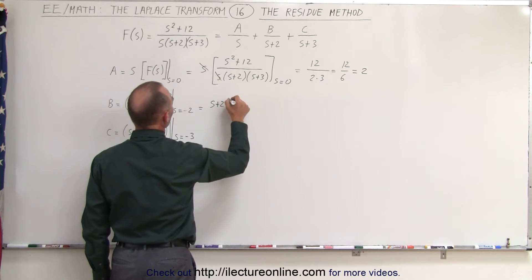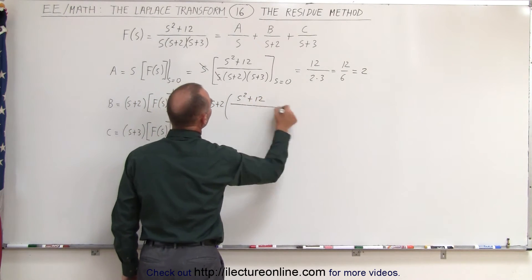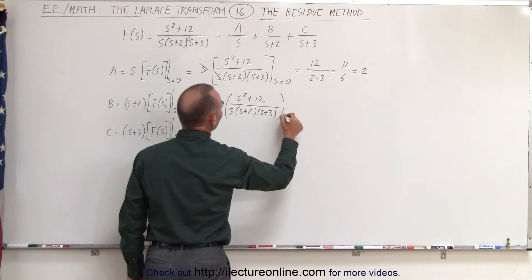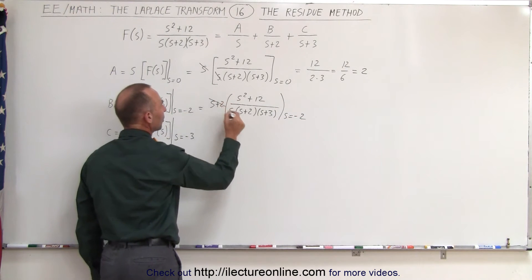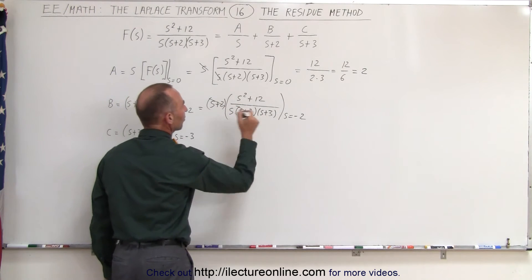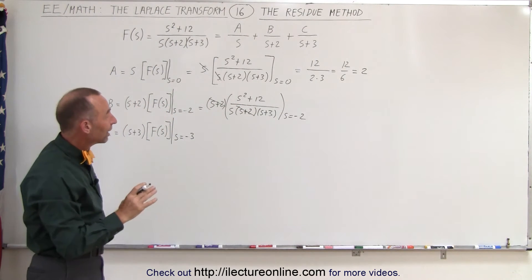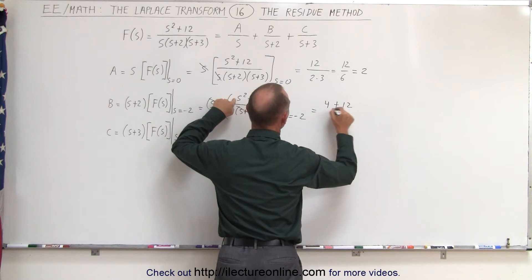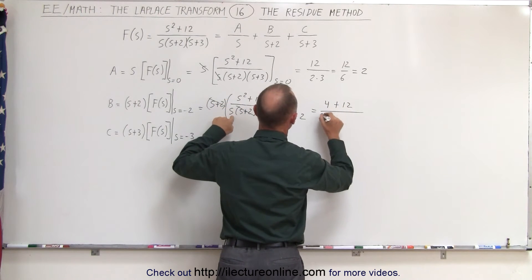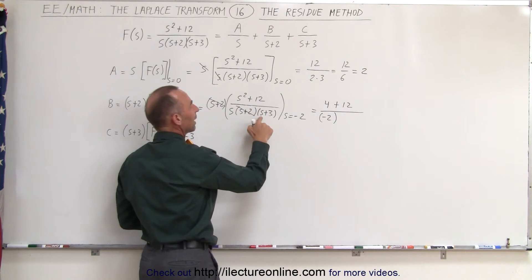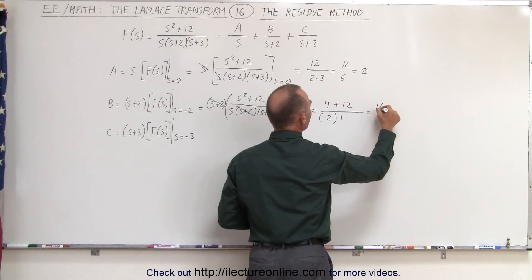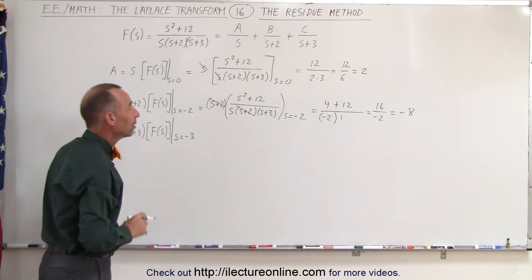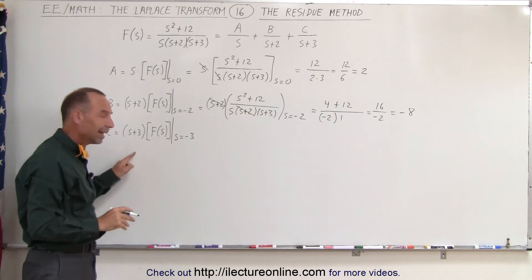Now trying to find B: this is equal to (s plus 2) multiplied times (s squared plus 12) divided by s times s plus 2 times s plus 3, evaluated when s is equal to minus 2. The (s plus 2) terms cancel out, and now letting every s go to minus 2, this becomes minus 2 squared which is 4 plus 12, divided by minus 2 times (minus 2 plus 3). Minus 2 plus 3 gives 1, so this is equal to 16 divided by minus 2, which is equal to minus 8 — again the same value we got in the previous example.